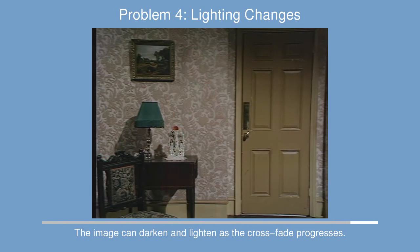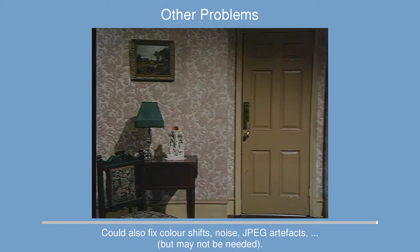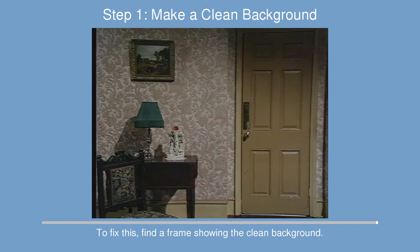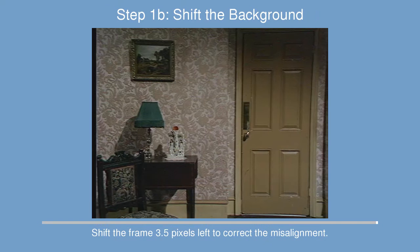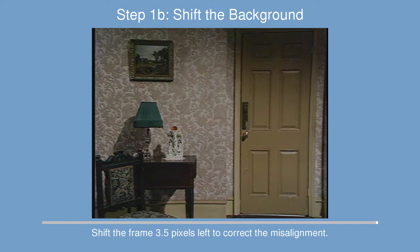I've used a variety of software tools to help. The Imp can be used to do subpixel shifts — shift an image 3.5 pixels, scale the image up to twice the size, then shift the image 7 pixels, then halve its size again.